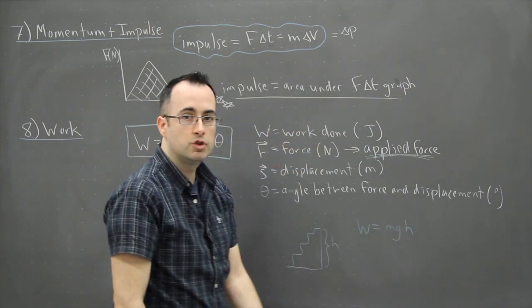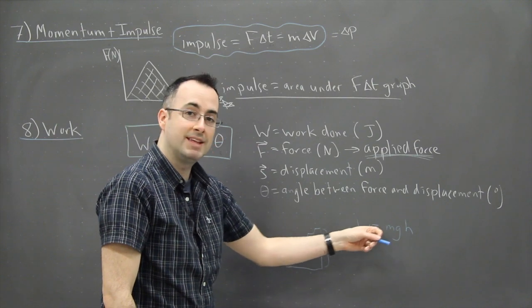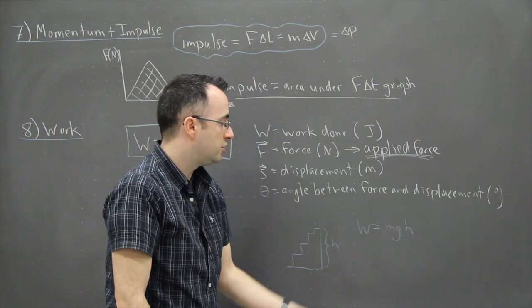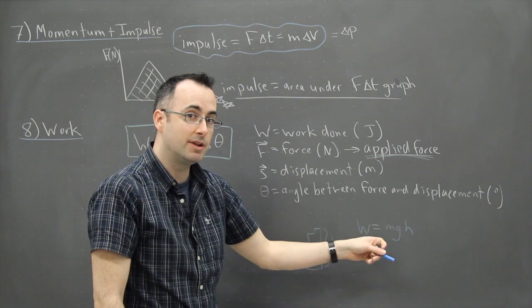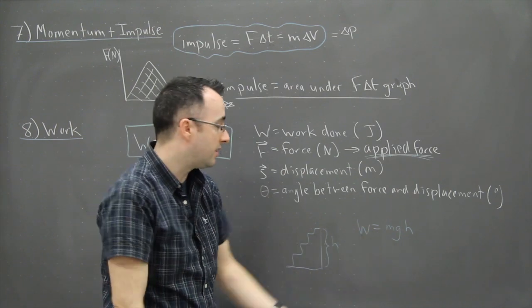That's the force, times a displacement which is h. So in this case the work done against gravity is mgh. You might recognize that as the equation for potential energy or gravitational potential energy.